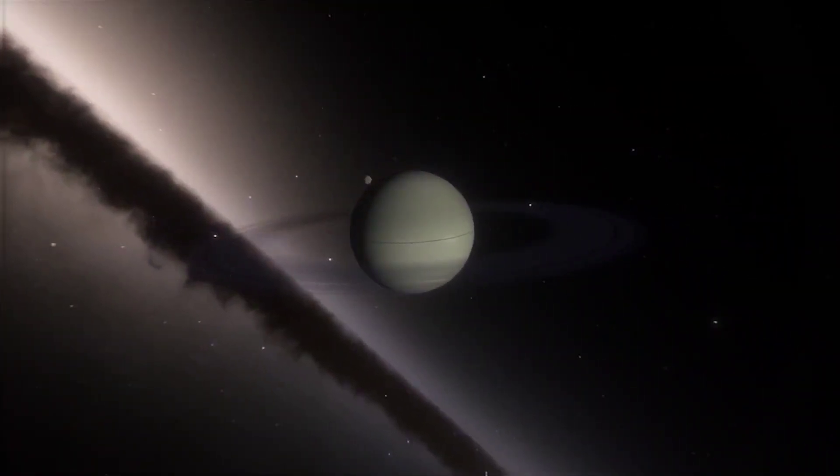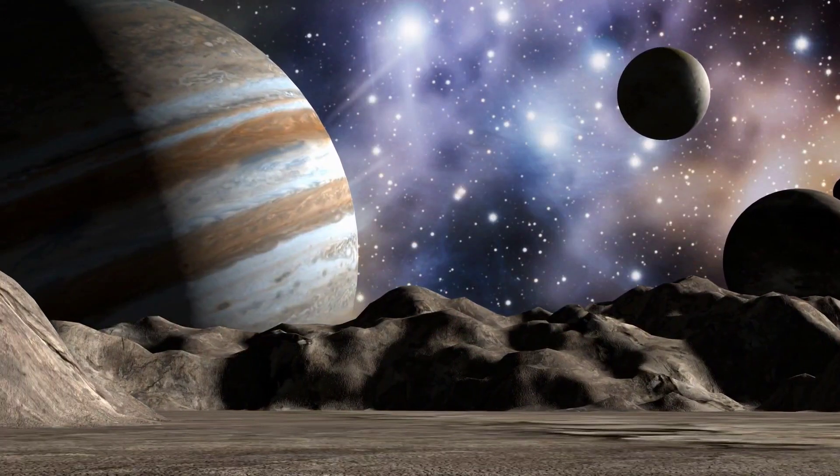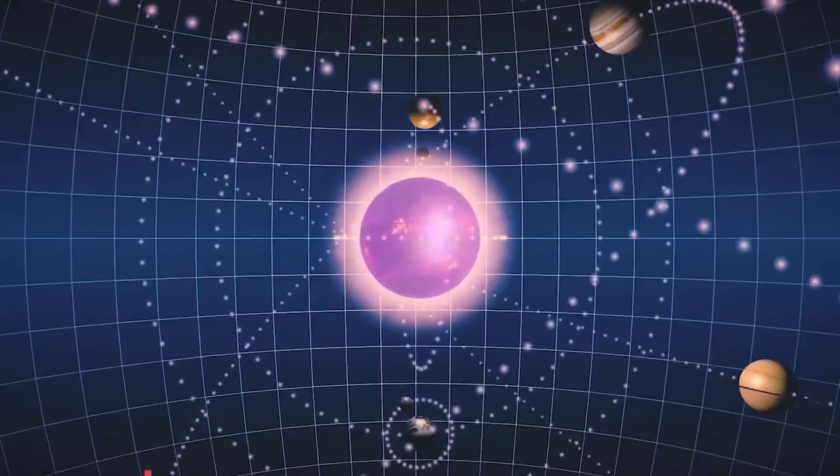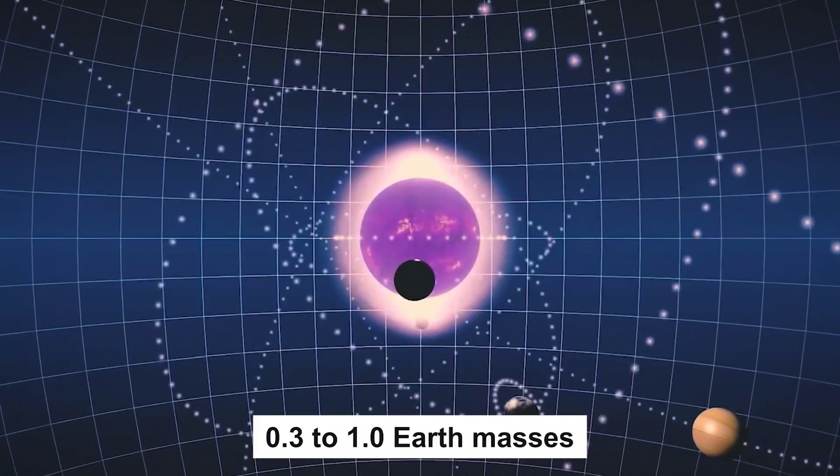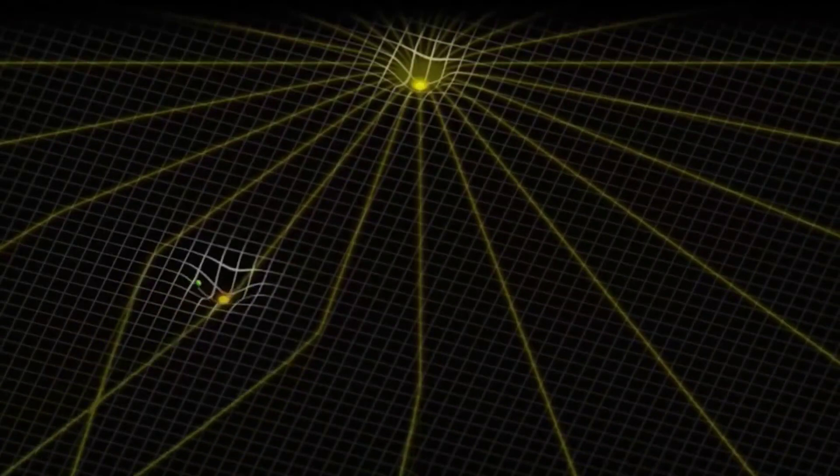Although some of these Rogue Planets are as big as Jupiter, most are said to be rather small, with weights ranging from 0.3 to 1.0 Earth masses, according to theories about planet formation.